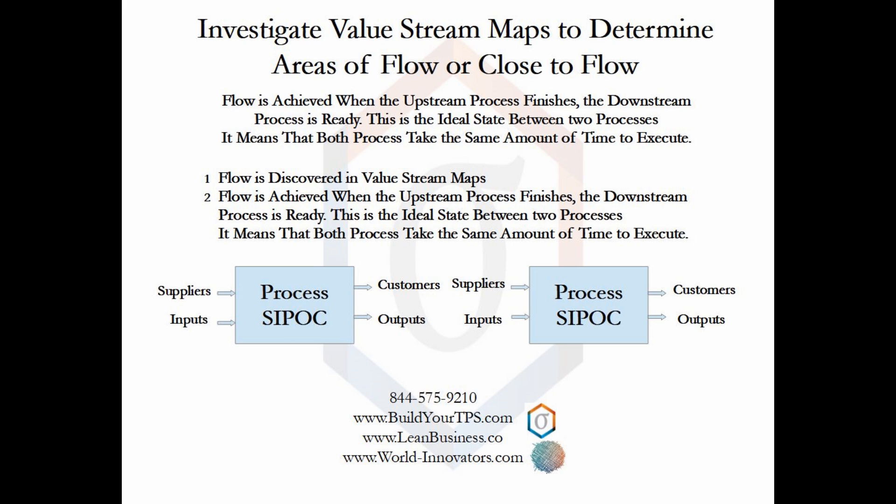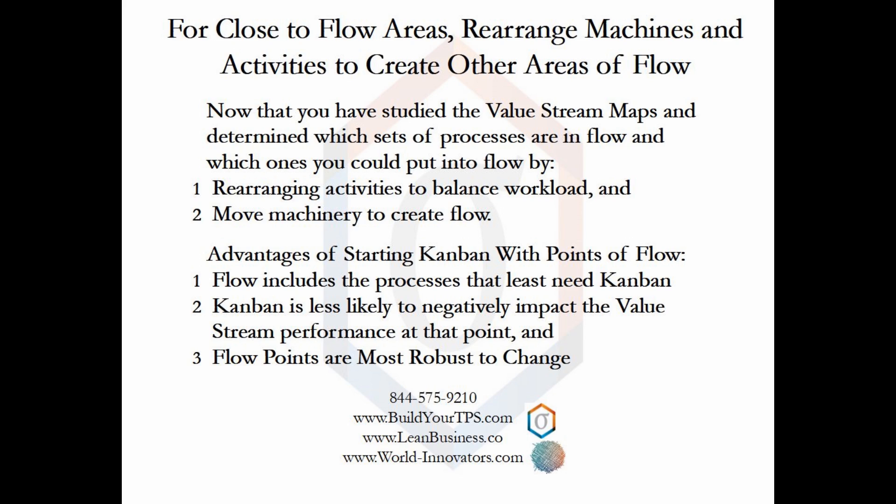You search for processes that are in flow, close to flow, and can be manipulated to flow. The value stream maps point to areas of flow and potential flow. Now you are ready to maximize the number of flow processes, where you can move activities between processes to balance the process times. Also, when machines are involved, it may be possible to rearrange them to attain two possible benefits.